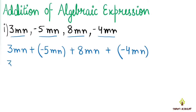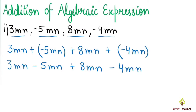Now, 3mn plus minus minus 5mn, plus 8mn, plus minus minus 4mn. We will add and subtract terms which have the same algebraic factors. The algebraic factor here is mn.